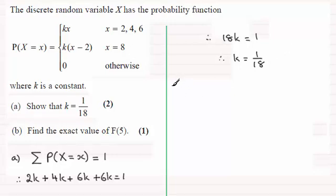Now, for the second part, part B, we've got to find the exact value of this capital F of 5. Now, this is the cumulative probability distribution function. F of 5 means the probability of x being less than or equal to 5.